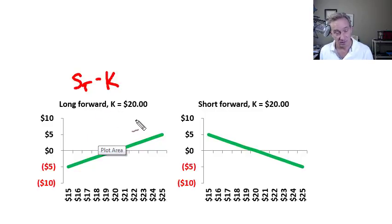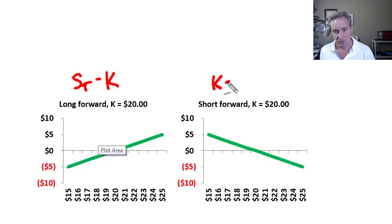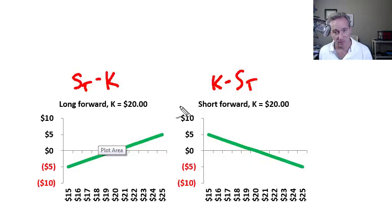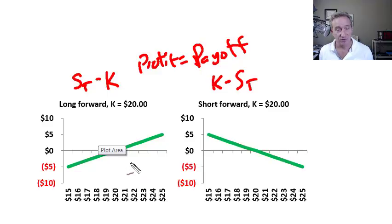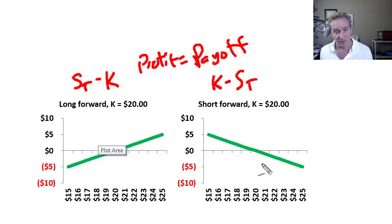If the long forward is obligated to buy the commodity in the future, it has a future value of S sub T, so they could sell it for that — this is going to be their economic gain regardless of physical or cash settlement. In the case of the short forward, it's just delivery price minus the future commodity price. We would call these payoff diagrams, and we could also call them profit diagrams because profit equals payoff in the case of forward and futures contracts, because there is no initial cost — unlike with options. If we set aside collateral requirements and other frictions, there is no initial cost to enter the long or short position. It's an initial cost of zero, so profit equals payoff.